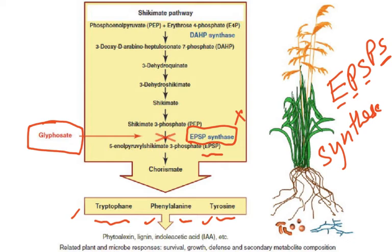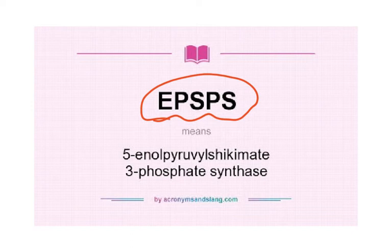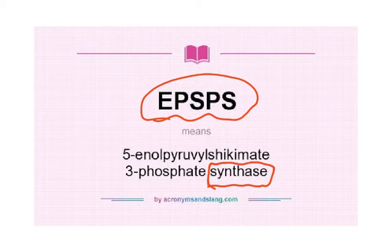Glyphosate is a pesticide — it binds to and blocks EPSPS. This enzyme is located within the chloroplast and catalyzes the reaction of shikimate 3-phosphate and phosphoenol pyruvate to form 5-enol pyruvyl shikimate 3-phosphate. The key point is that we are targeting the enzyme EPSPS using glyphosate.